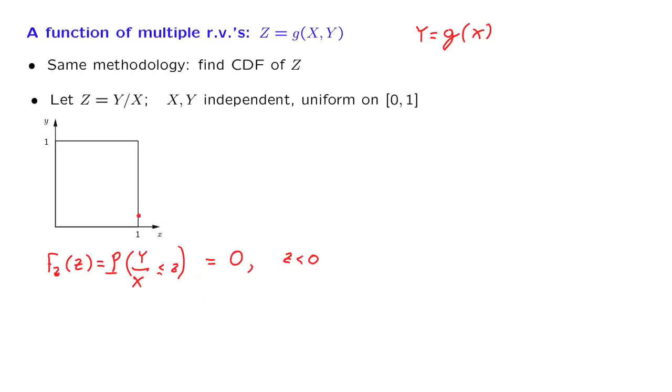Now, suppose that z is a positive number. Let us draw a line that has a slope of little z. y over x being less than or equal to little z is the same as saying that y is less than or equal to little z times x. This is the line on which y is equal to z times x. So below that line, y is going to be less than or equal to z times x. So the event of interest is actually this triangle here. And the probability of this event, since we're dealing with a uniform distribution on the unit square, is just the area of this triangle.